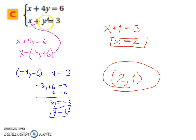So get one of them by itself. Then take that value, whatever you got, and stick that in for the variable that you just solved for.